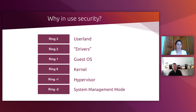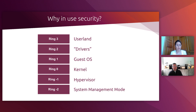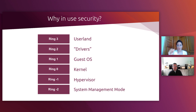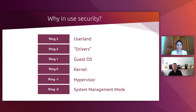Whichever industry you are working with, your applications are going to be living in Ring 3 — adopting the terminology of x86 architectures — running as a user-level application. As a user-level application running in Ring 3, you have to trust a lot of code underneath you: a lot of privileged system code such as the guest operating system, the hypervisor, the system management mode.